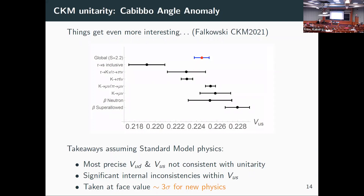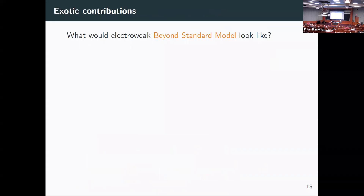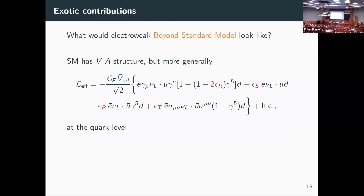If we take all these numbers and fit with some potential new physics, we get nice agreement at the three-sigma level. So we're in a twilight zone: not quite five sigma, but not quite one sigma either. You can ask: if we take this at face value, what would beyond-standard-model physics look like in this sector?